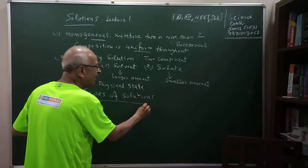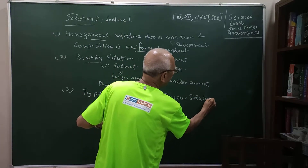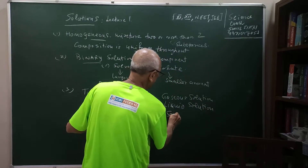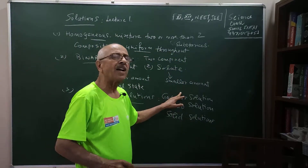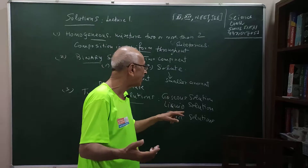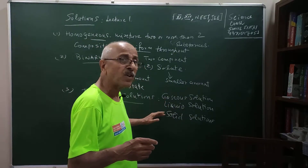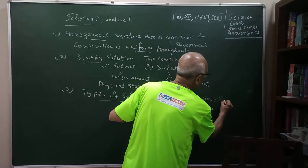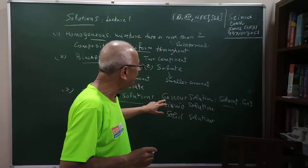What types of solutions are possible? There can be gaseous solutions, liquid solutions, and solid solutions — three types, and in total there will be nine combinations. The physical state of the solvent identifies the type of solution. In a gaseous solution, the solvent is a gas. In a liquid solution, the solvent is liquid. In a solid solution, the solvent is solid.